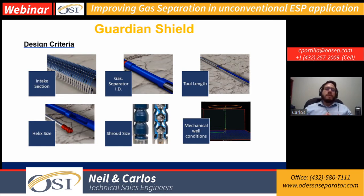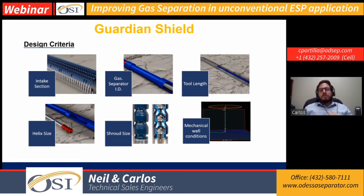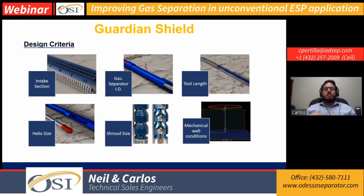The shroud size: we always work closely with the ESP companies to make sure all dimensions — the OD of the motor, the ID of the shroud — are correct. The shroud length must be very precise. We also check the mechanical well condition — inclination, DLS, and azimuth — to avoid severe angles that may affect the tool. Even when installing tailpipes, some cases have presented challenges, and we have gone as many as 10 tailpipes, so careful analysis of the situation is always needed.